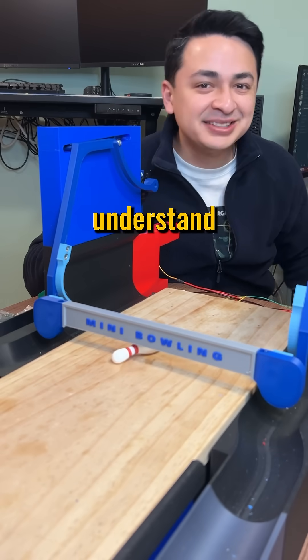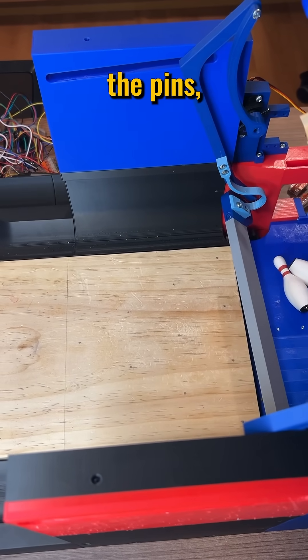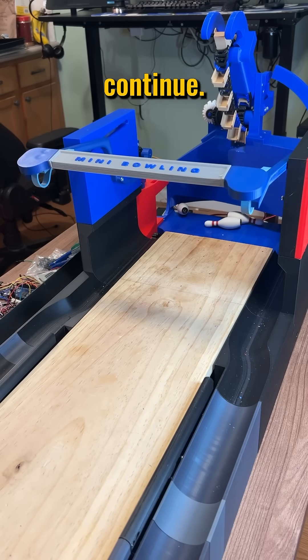But before we can fix this issue, we need to understand how the sweep works. The sweep has to move backwards to clear all the pins, move forward to block new bowling balls, and then lift up so the game can continue.